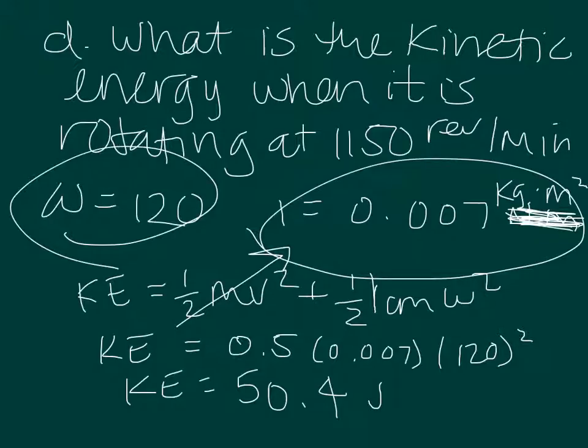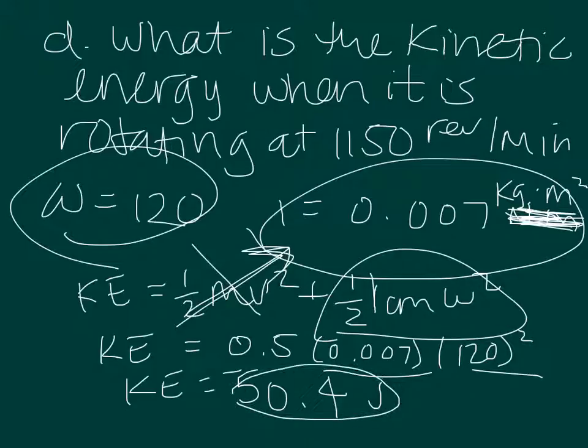So our equation for kinetic energy is 1 half mv squared for translational, and then 1 half moment of inertia times the angular speed squared. Here we don't have any translational energy, so we're just solving for this part of the equation. And we plug it in, and we get our kinetic energy to be 50.4 joules.